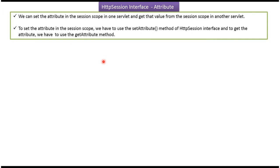In this video tutorial, I will cover how we can set the attribute in the session scope in one servlet and how we can get the same value from the session scope in another servlet. An attribute is nothing but an object. To set an attribute in session scope, we use the setAttribute method of the HttpSession interface. To get the attribute, we use the getAttribute method of the HttpSession interface.